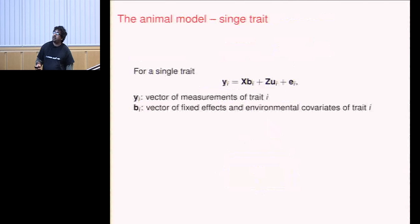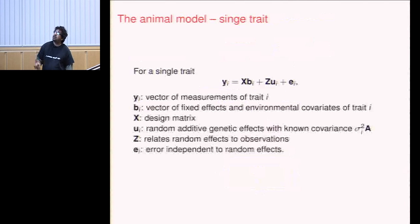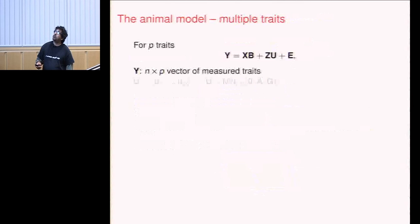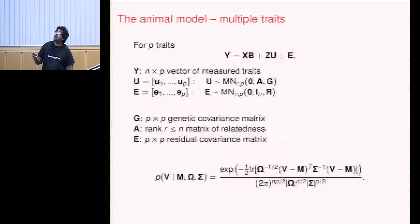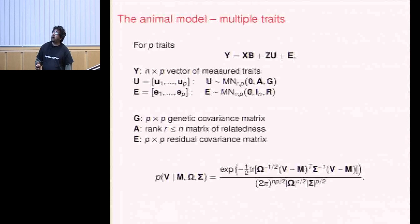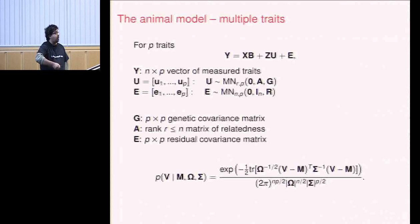For multiple traits, Y is now an n-by-p matrix of measured traits, U is the genetic part, and E is the environmental noise. These come from a matrix-variate normal — a generalization of a multivariate normal — where you draw a random matrix with two different covariances: one for the rows (relatedness between individuals) and one for the columns (how traits are related to each other).